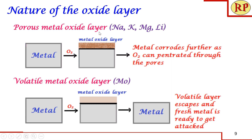Next comes the porous metal oxide layer. This is a very interesting but very dangerous type. When the metal comes in contact with oxygen, it forms a metal oxide layer which is highly porous in nature, so it easily forms cracks. The oxygen present in the atmosphere can penetrate through the pores, and the metal inside will come in contact with oxygen and undergo further corrosion. Over a period of time the whole metal undergoes corrosion. This happens in metals like sodium, potassium, magnesium, and lithium.